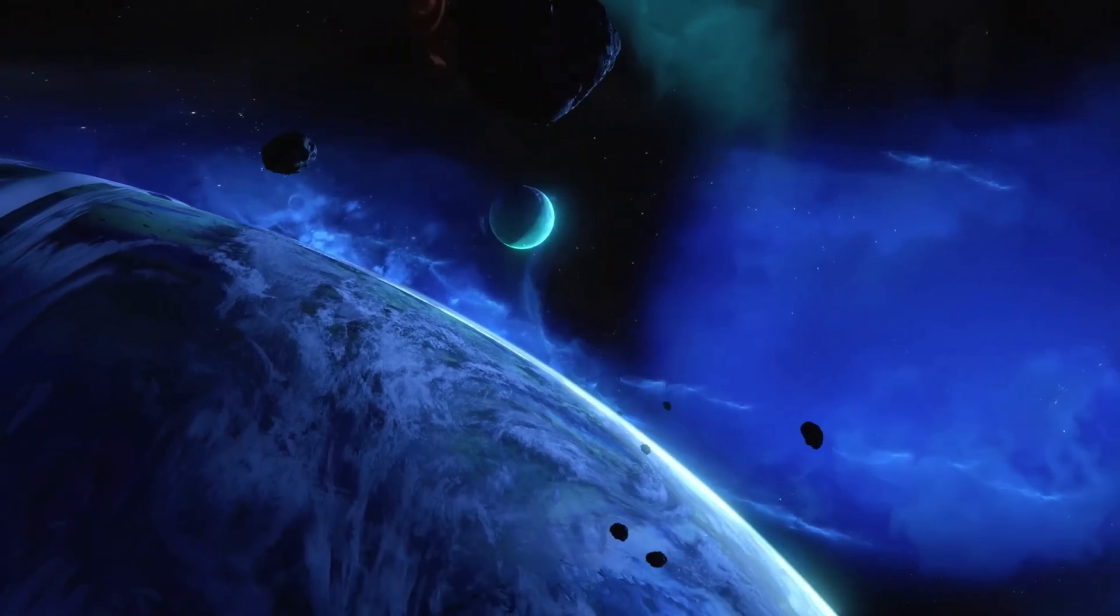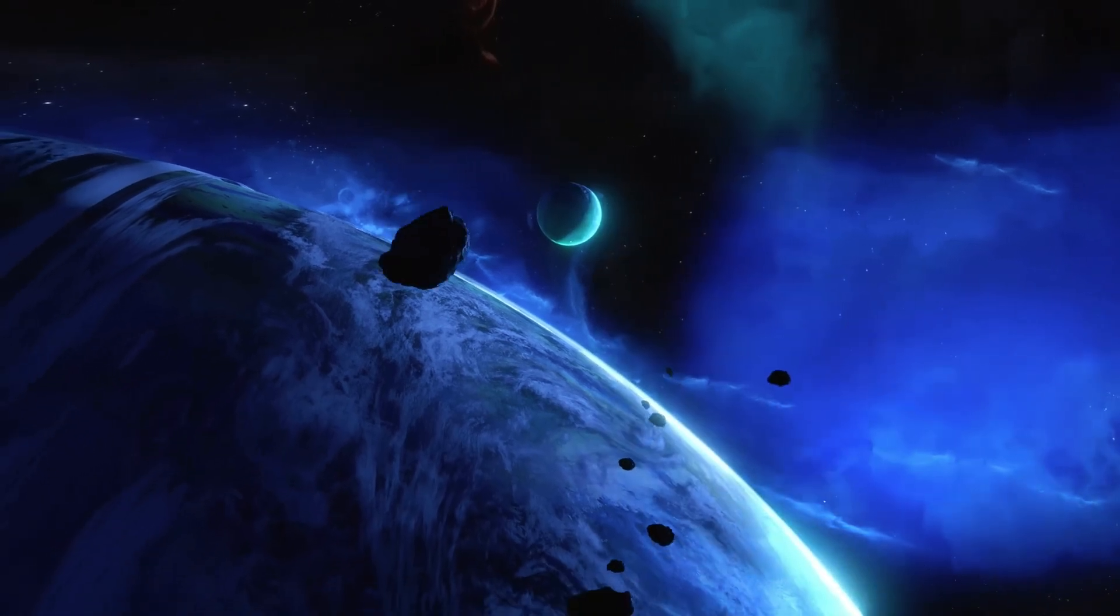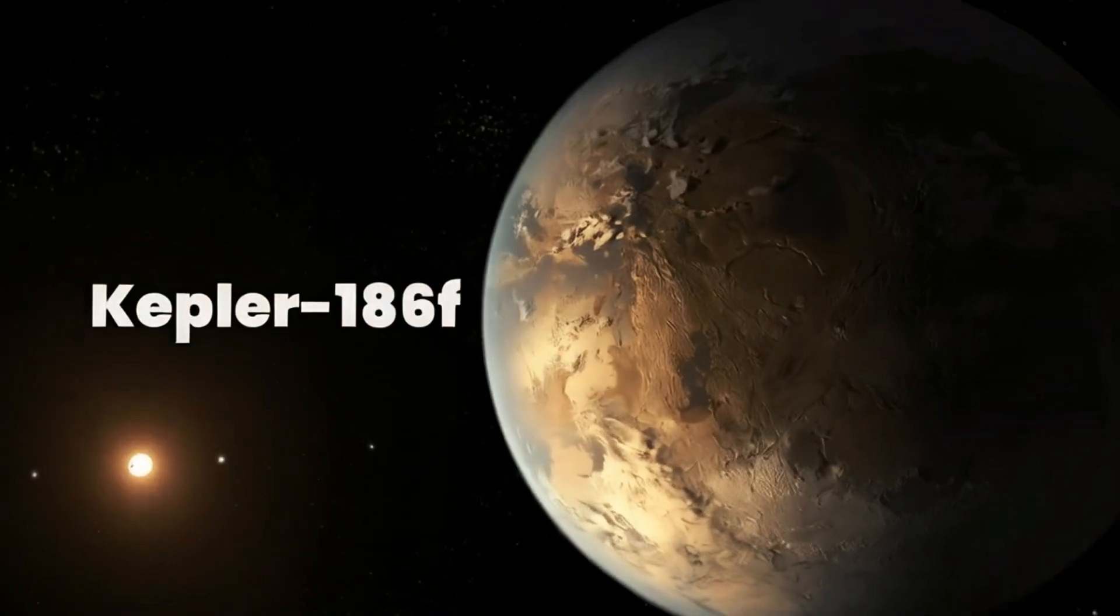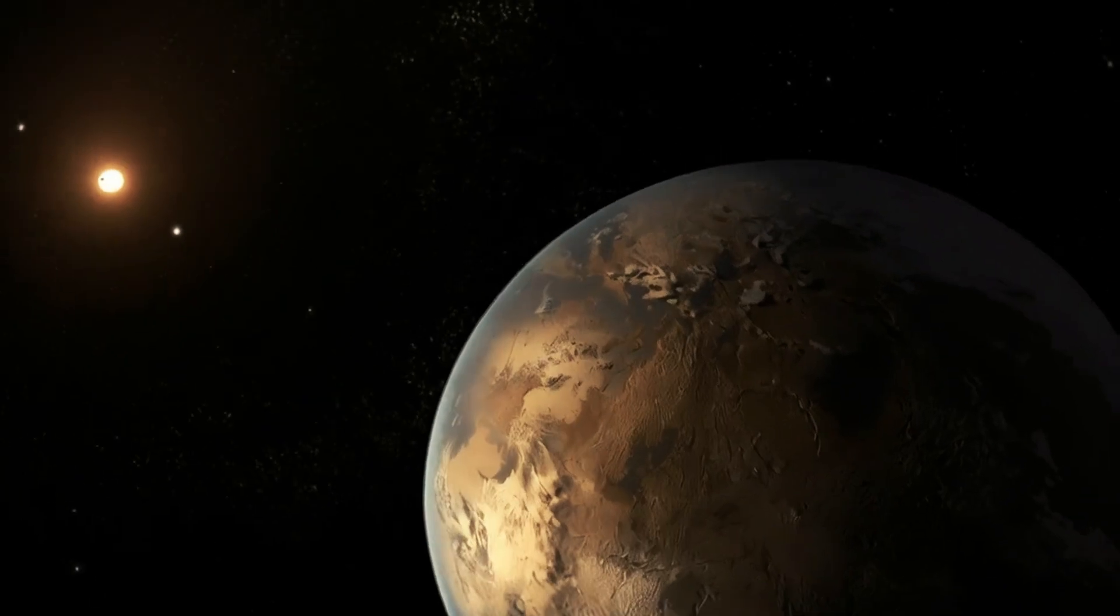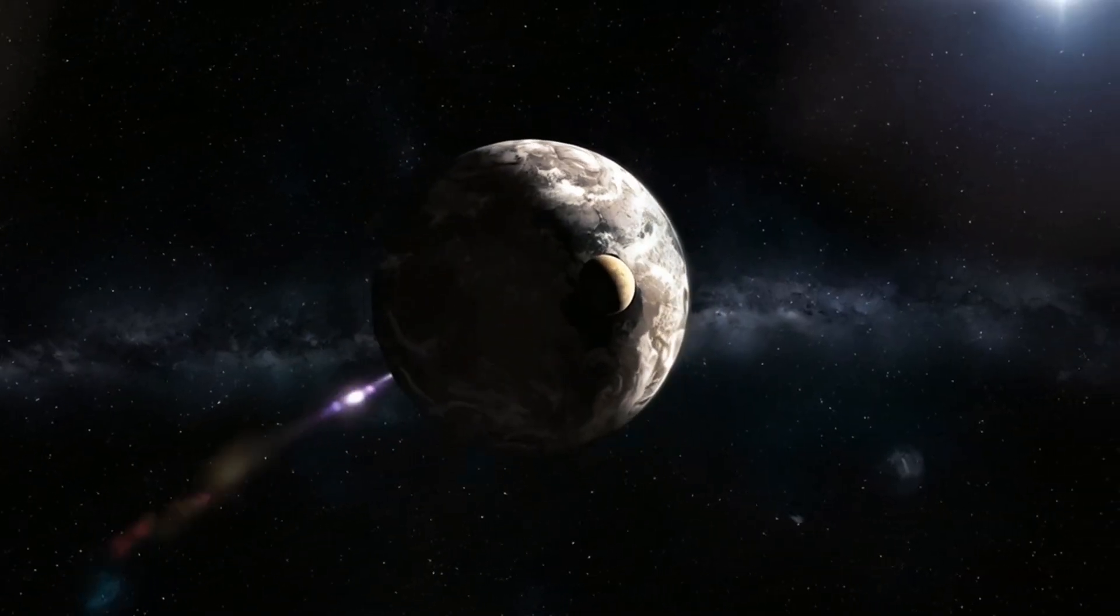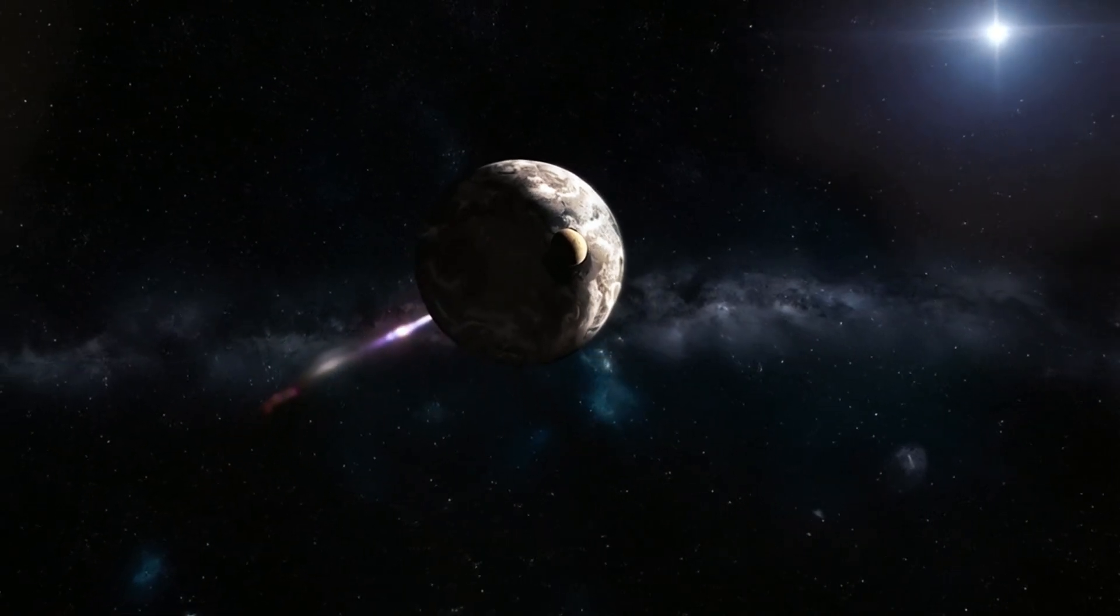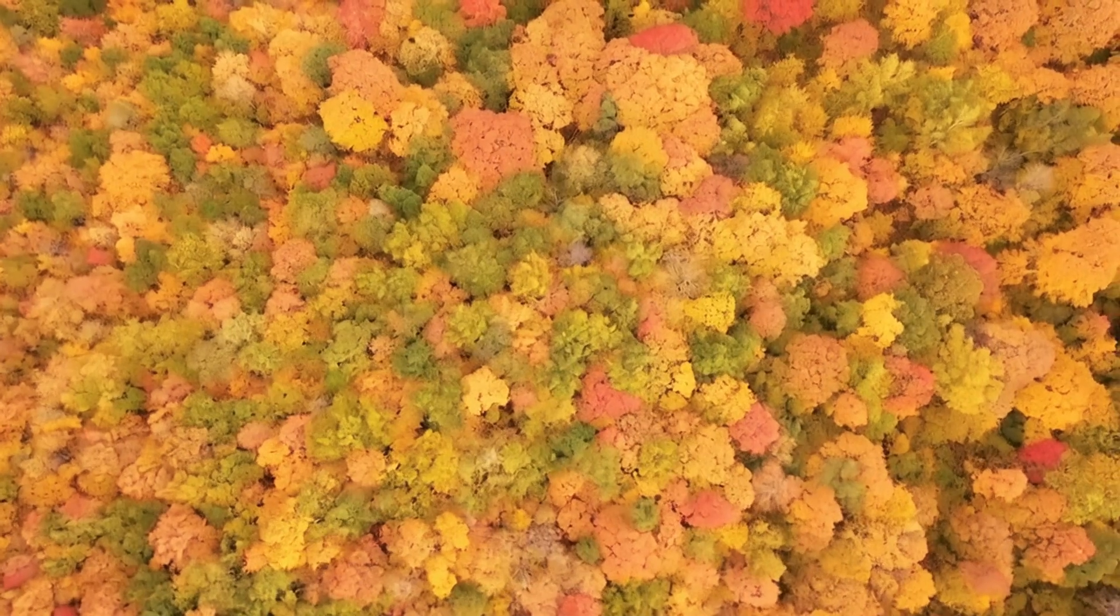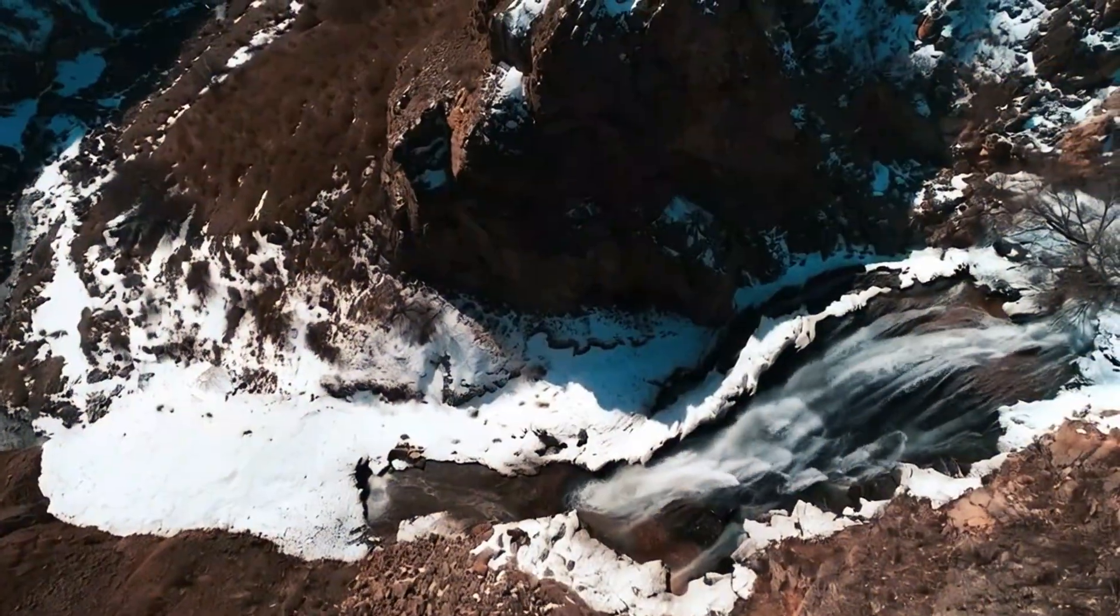Kepler-186f ignited the imaginations of space nerds everywhere when NASA announced its discovery. Now, a new study indicates the exoplanet 500 light-years away may also have seasons and a climate similar to our own.